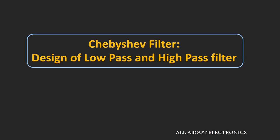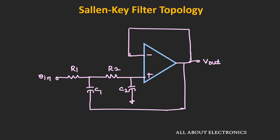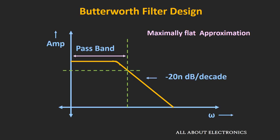Hey friends, welcome to the YouTube channel All About Electronics. In the last video on filter design, we saw how to design the low pass and high pass Butterworth filters using the Sallen-Key filter topology. That filter has a flat passband and a roll-off rate of 20 dB per decade, meaning a 4th order filter achieves 80 dB per decade.